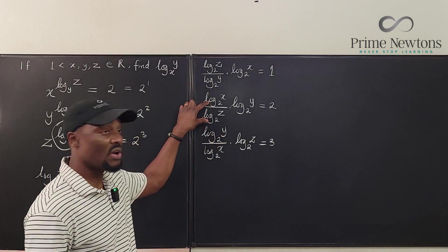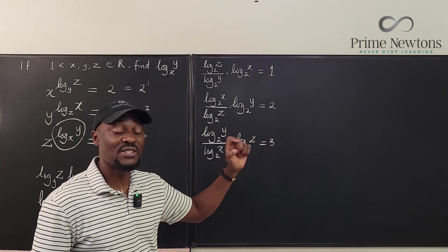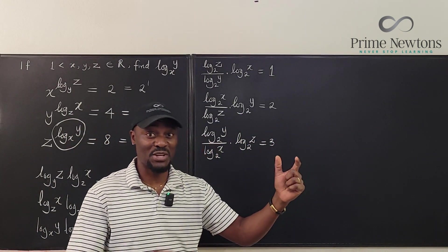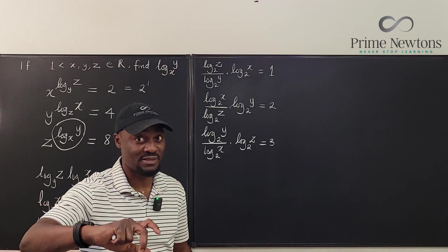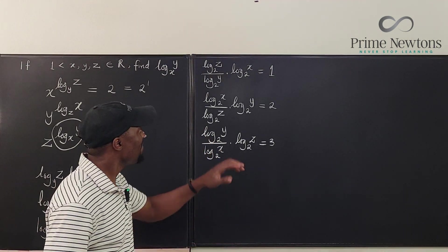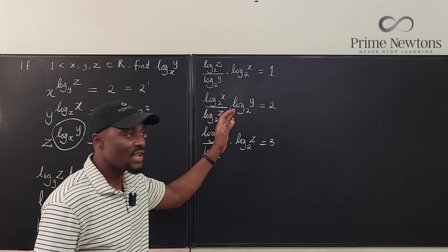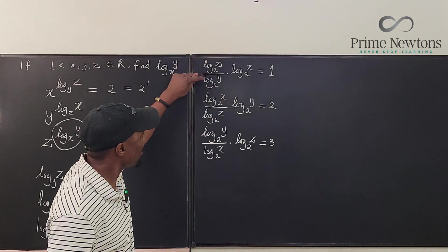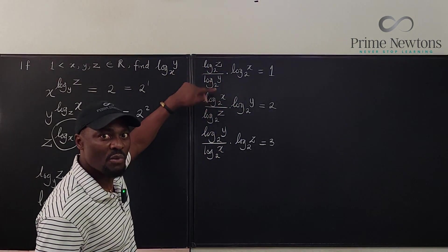No, no, no. Division of logs does not become subtraction. It is a subtraction of logs that becomes the division of the arguments. Okay. So don't forget that. We can't apply that here. But one thing we can do, because these are all multiplications, we can actually look at what would happen if we multiply.